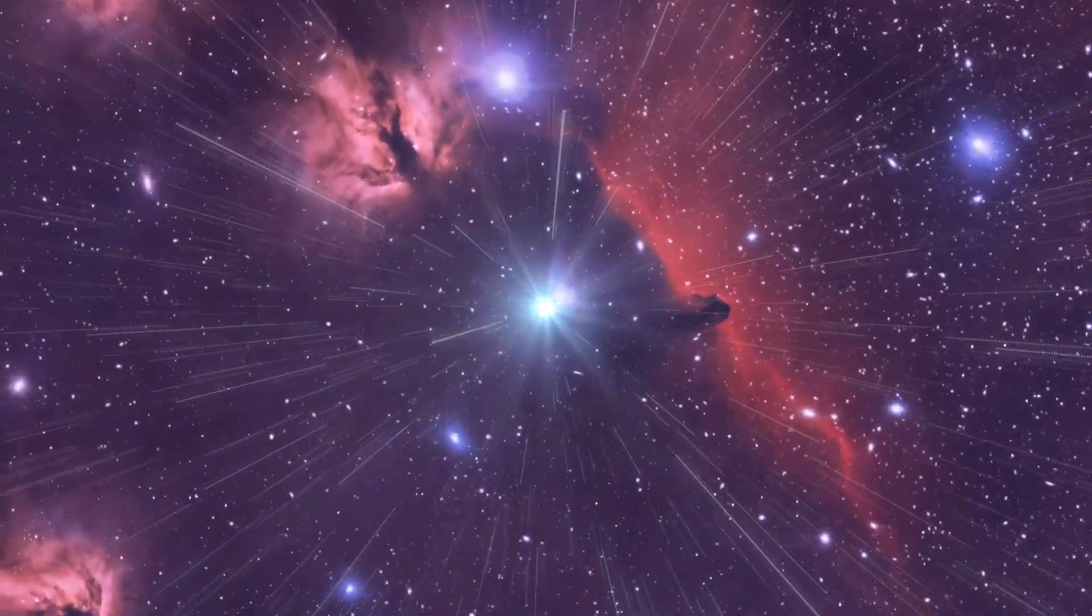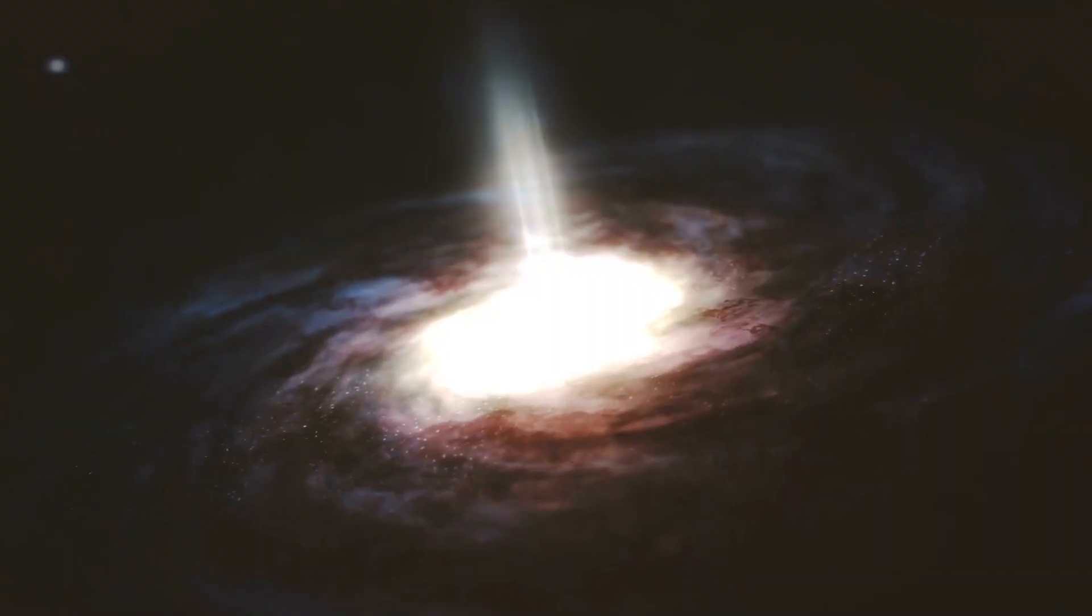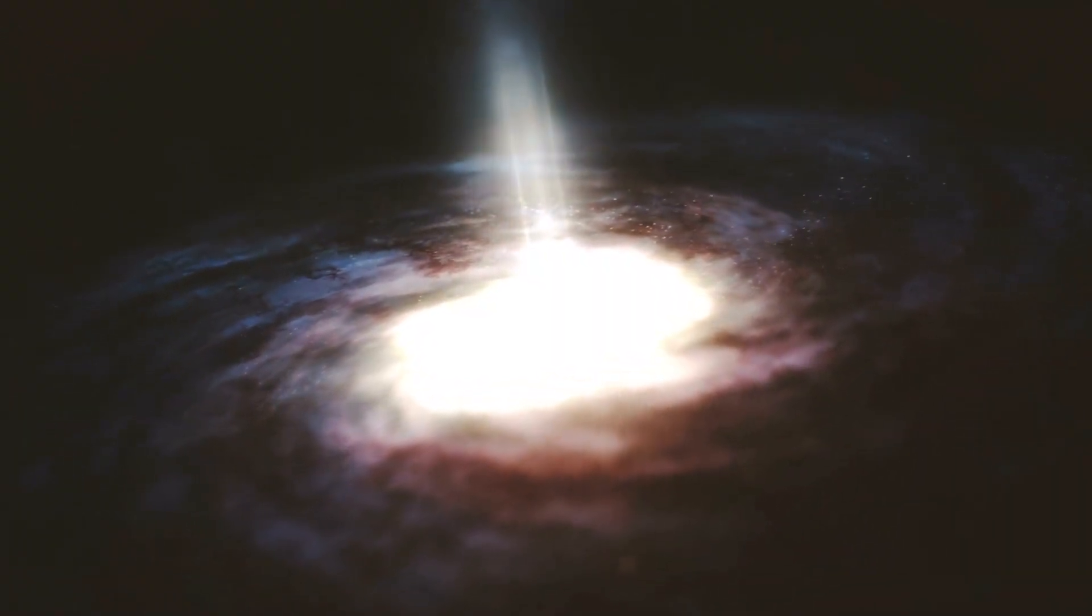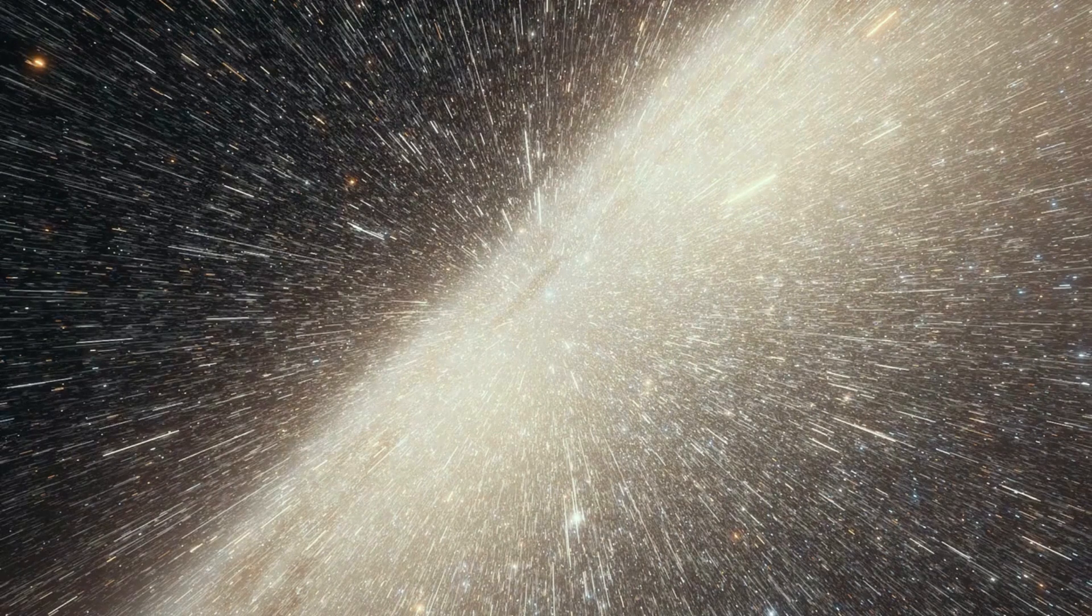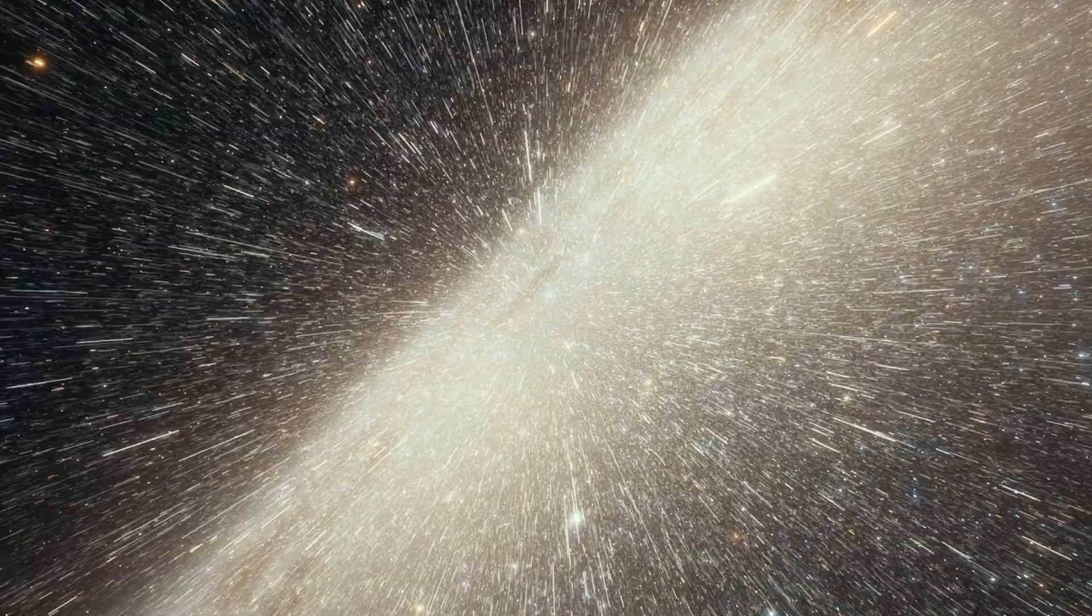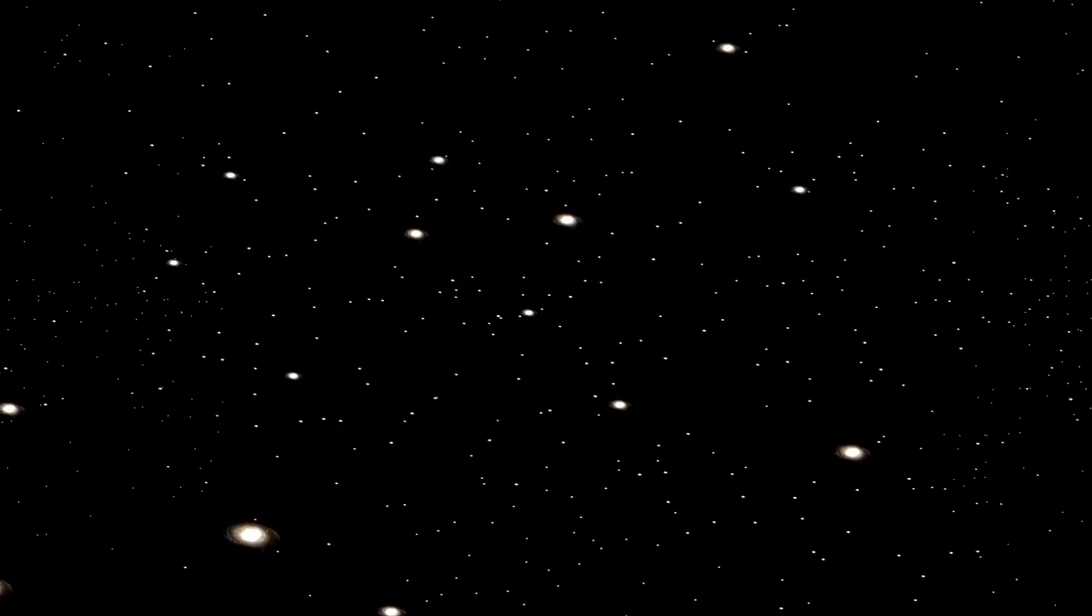Ring galaxies are intriguing and relatively rare celestial objects characterized by their circular or elliptical ring-like structures. The rings consist of bright, young, and blue stars, while the central region contains relatively little luminous matter. There are three main types of observed optical ring phenomena: nuclear rings, inner rings, and outer rings.